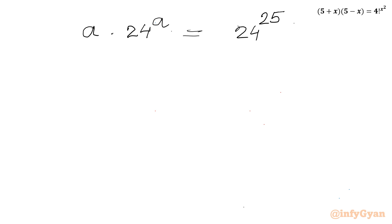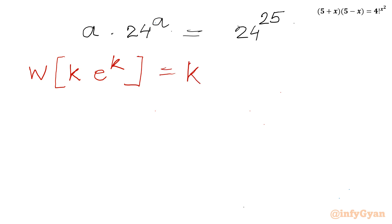Now we know one important property of the Lambert W function. If we have a product of the form k times e raised to the power k, and we apply the Lambert W function, then the result will be equal to k. So we will try to make our equation in this form first.